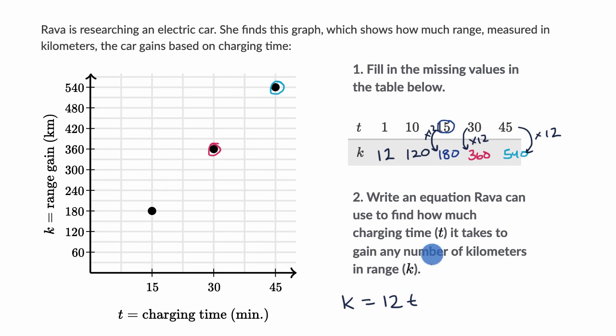But that's not what they want. They want to find out how much charging time T it takes to gain any number of kilometers in range K. So what we need to do here is solve for T. So let's divide both sides by 12 to just have a T by itself on the right-hand side. And we are going to be left with T is equal to K over 12.